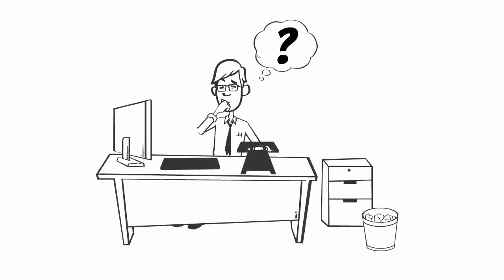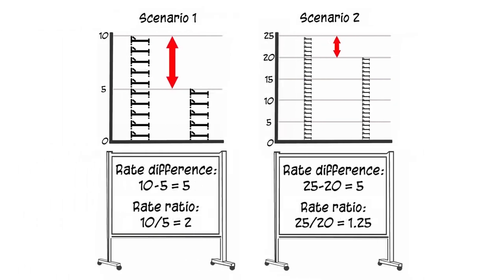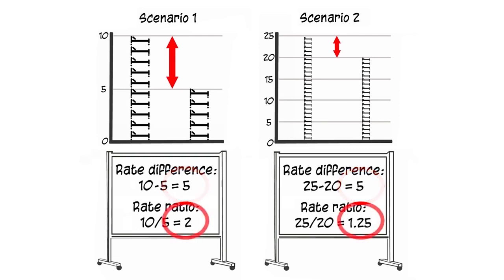What does this mean? If the gap were eliminated in both scenarios, hospitalizations would be reduced by the same number — 5 fewer cases per 100 people — despite the fact that the relative inequality is lower for scenario two.